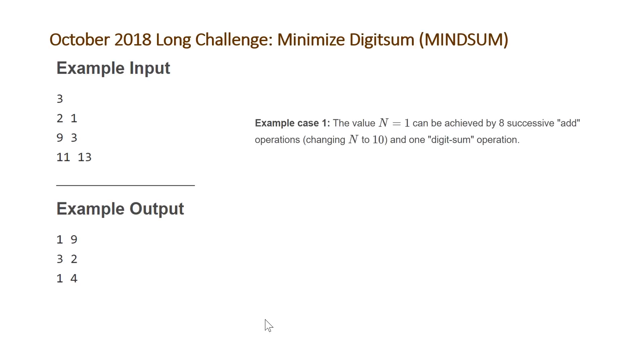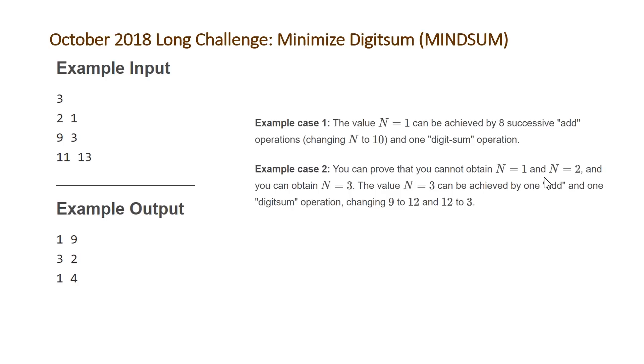For the second example, n equal to 9 and d equal to 3, we have this explanation. You can prove that you cannot obtain n equals 1 and n equals 2, and you can obtain n equals 3. The value n equals 3 can be achieved by one add and one digit sum, changing 9 to 12 and then 12 to 3. So you add 3 to 9, getting 12, and then you take digit sum of 12, and that gives us 3. We're sort of going to glaze over the fact that they say you can prove that you cannot obtain n equals 1 and n equals 2 because it's not really important in order to solve this problem.